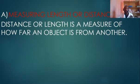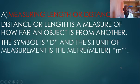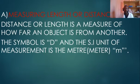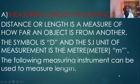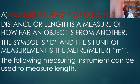How far is your nearest town to your house? The symbol for distance is D, and the SI unit for the measurement of distance or length is the meter. We use the following measuring instruments to measure length or distance.